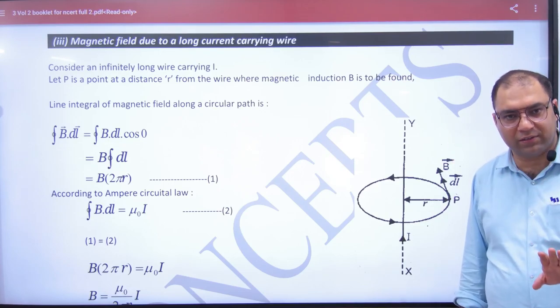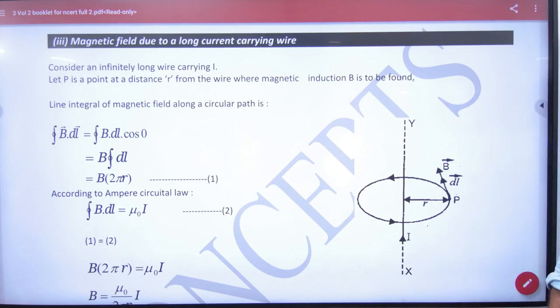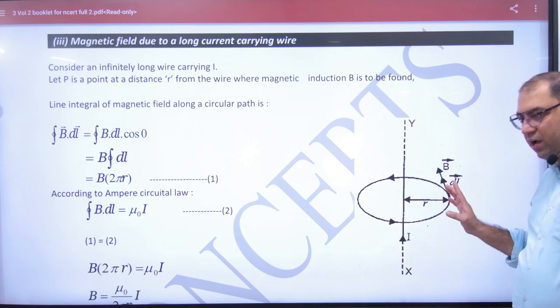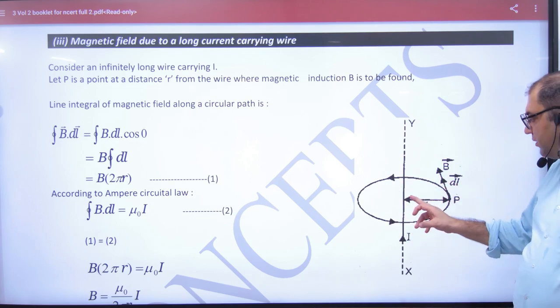We have done this with Biot-Savart Law. In the long current carrying wire, this is a long current carrying wire and we need to find magnetic field value, so we do this.